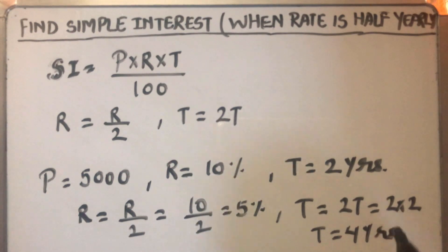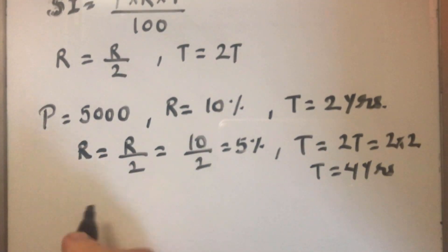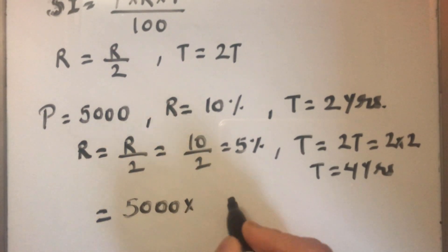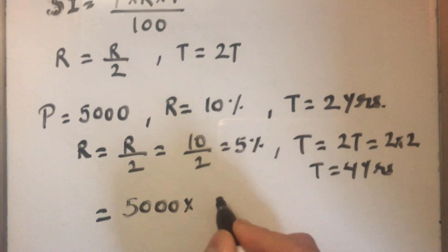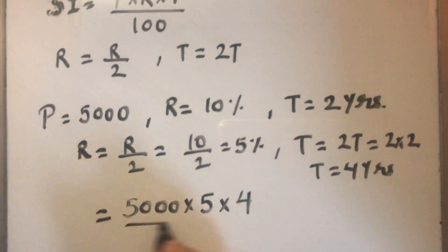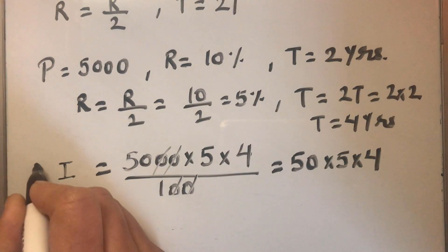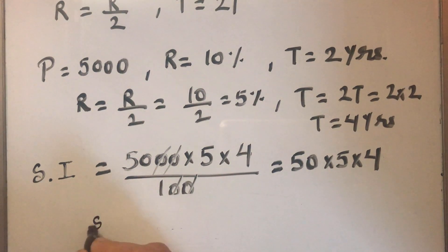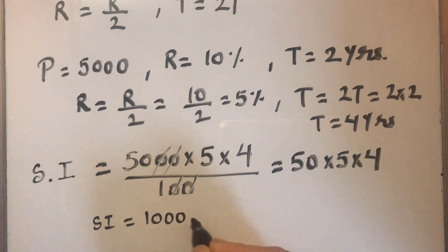Now we will put these values in the formula. So our formula is P times, P here will be 5000, 5000 times R, R will be 5% times T is 4 years over 100. So our simple interest SI is 50 times 5 times 4, simple interest which will give us 1000 rupees.